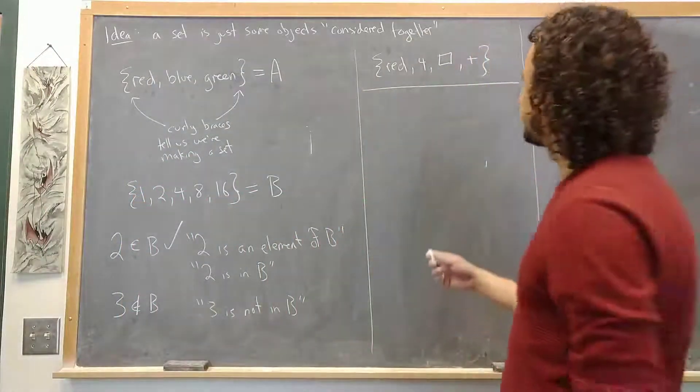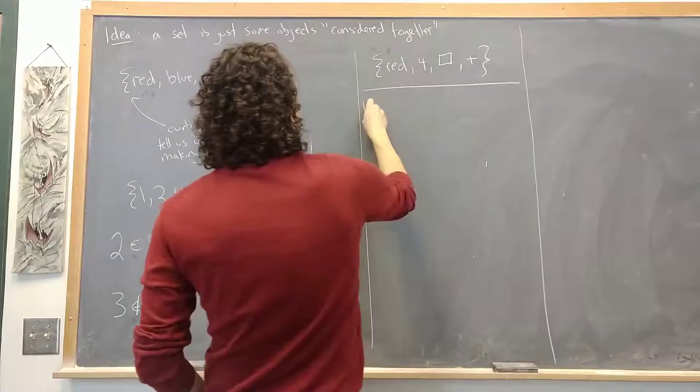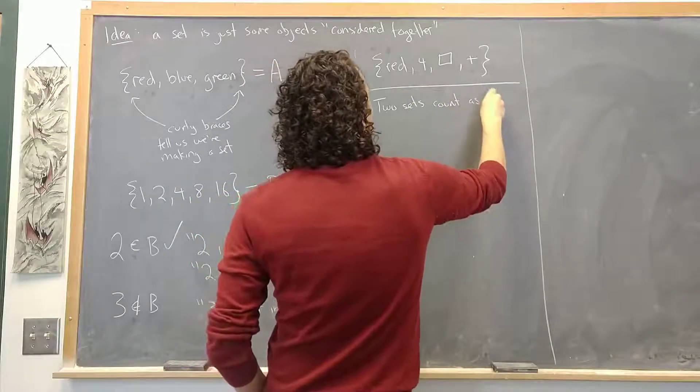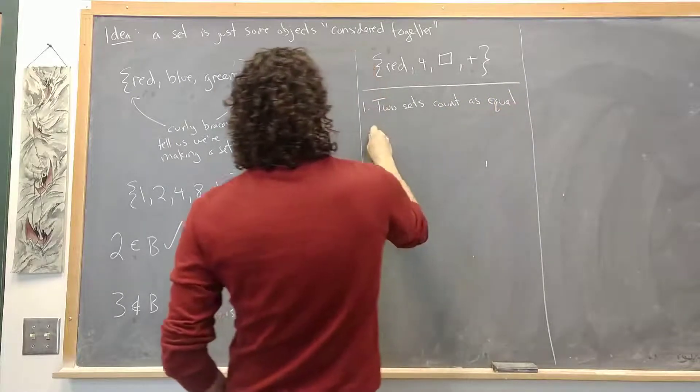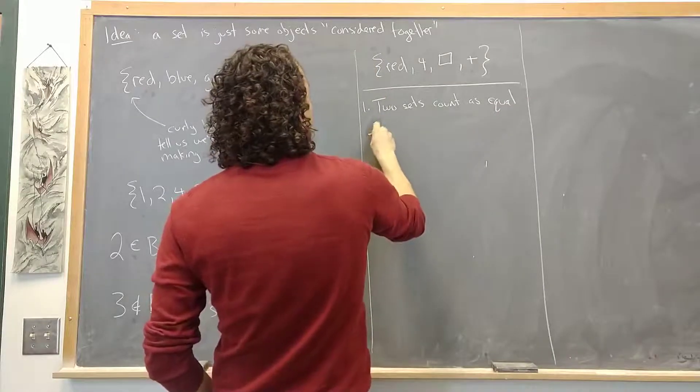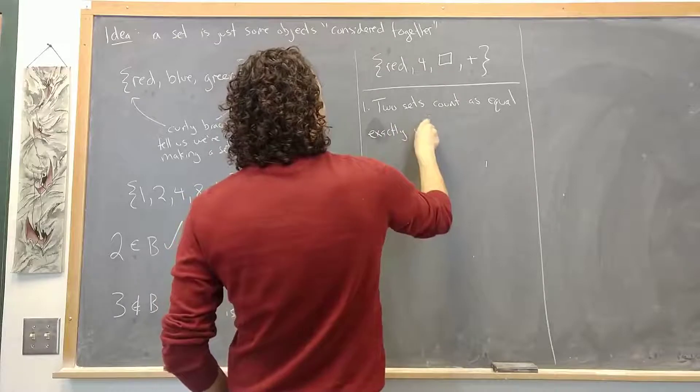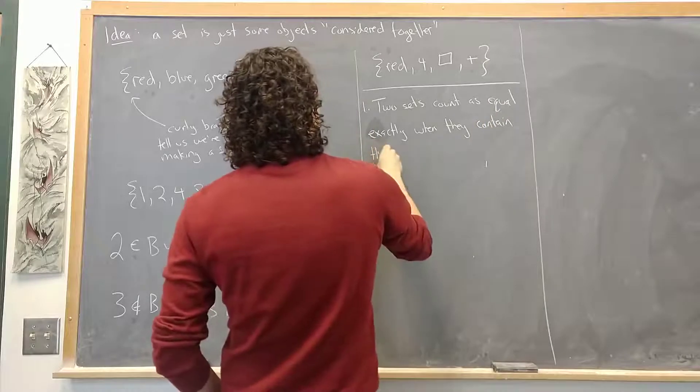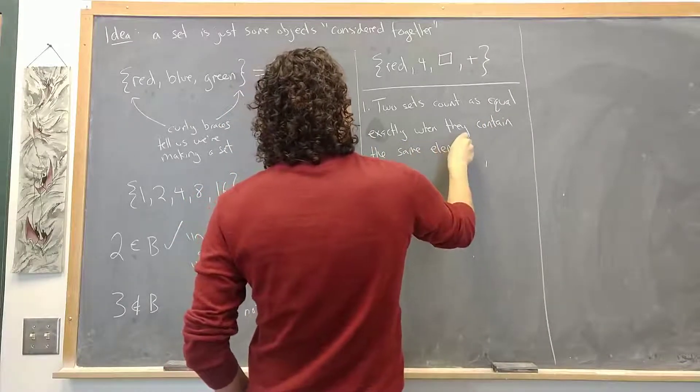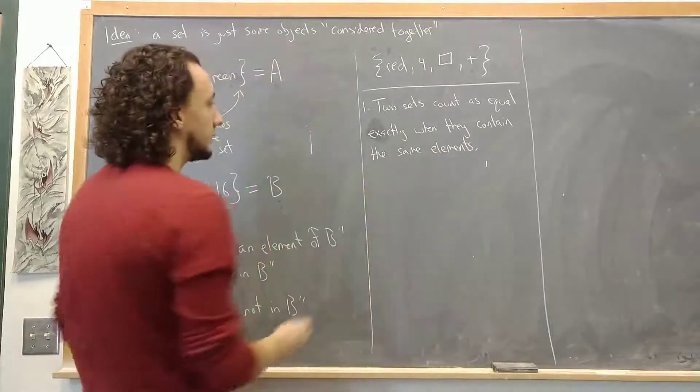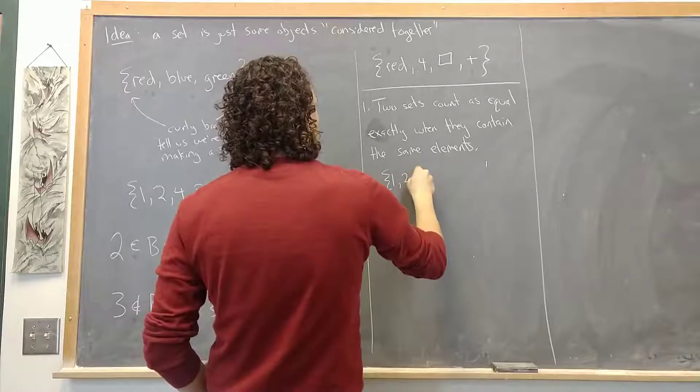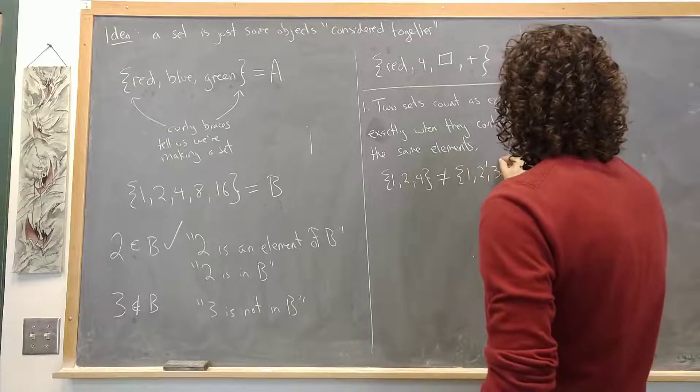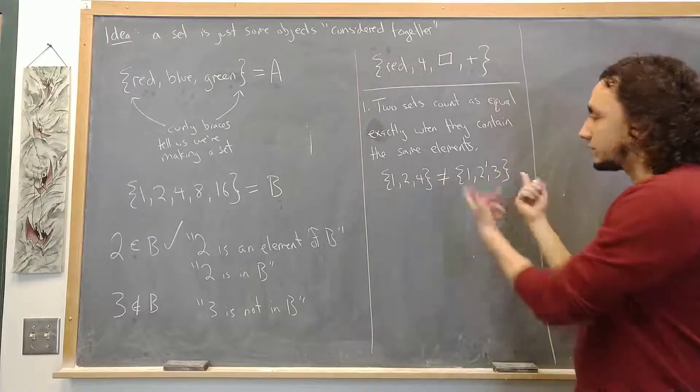Now an important thing to note here is, well maybe two things. Two sets count as equal exactly when they contain the same elements. So that's just to say the set of 1, 2, 4 is not equal to the set of 1, 2, 3 because although they have some overlap they don't contain exactly the same elements.